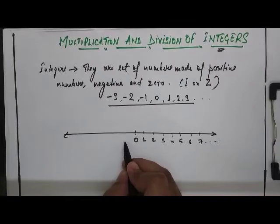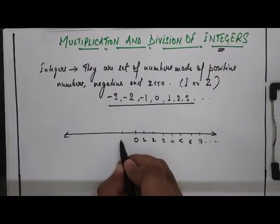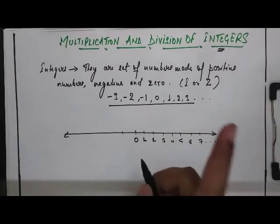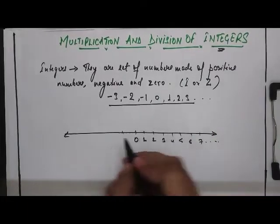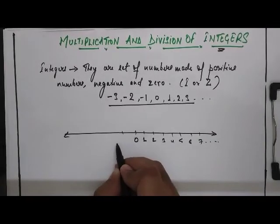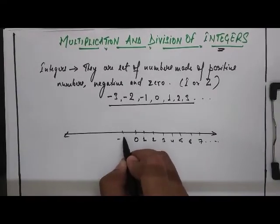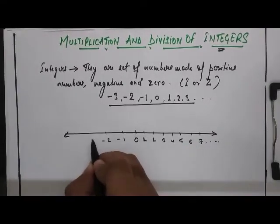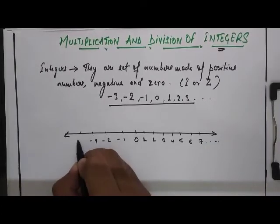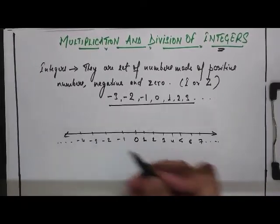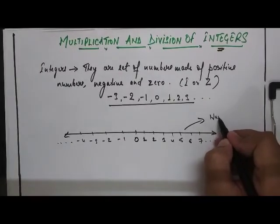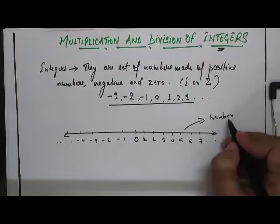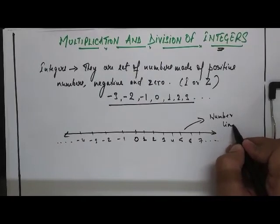On the left hand side the numbers remain the same but the sign changes. It's very important just remember that on the left hand side on the number line the numbers are written but with the negative sign. Example minus 1, minus 2, minus 3, minus 4 and so on. So this is called as the number line. It's a common thing which every student must remember.